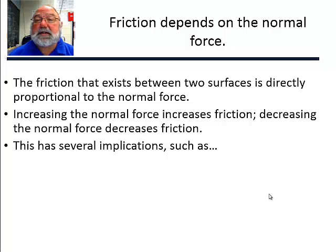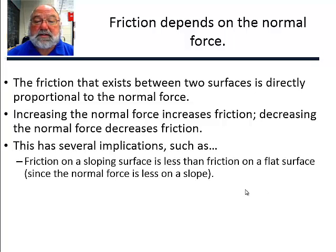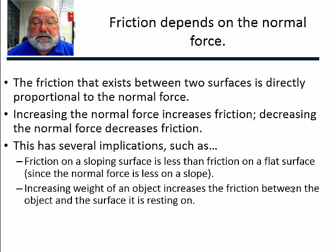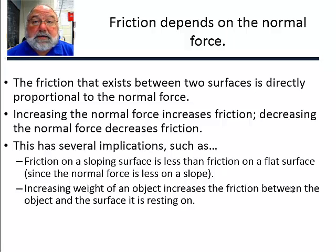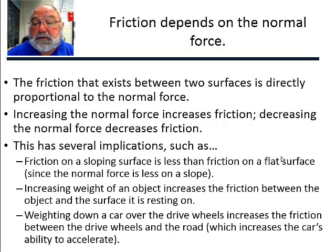There are several implications of this. Friction on a sloping surface is less than the friction on a flat surface because the normal force is less on a sloping surface than on a horizontal surface. If you increase the weight of the object, the friction increases. If you weigh down a car over the drive wheels, you've increased the normal force on the drive wheels, thereby increasing the friction force.